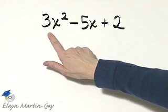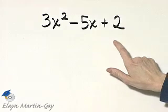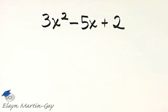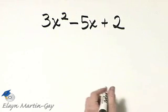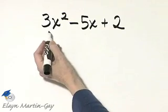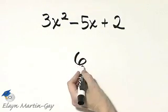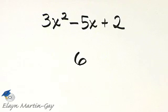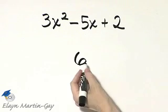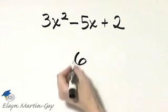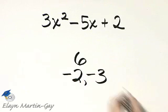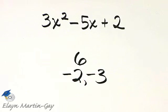What's the first step in factoring? Remember, it's looking for a common factor. There is none. So now let's factor by the AC or grouping method. I'm looking for two numbers whose product is 3 times 2 or 6 and whose sum is negative 5. Two numbers whose product is 6 and whose sum is negative 5. That would be negative 2 and negative 3.